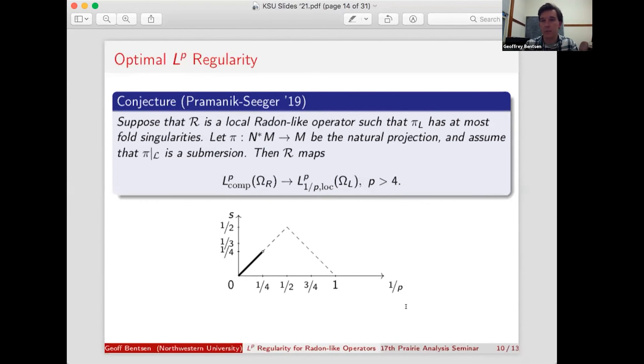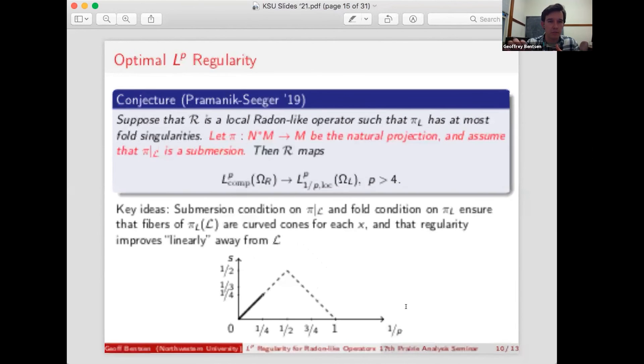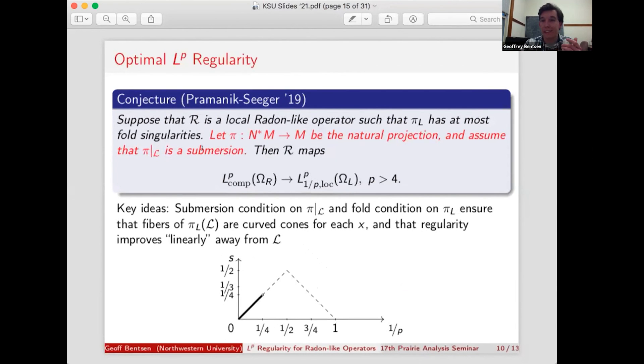And that second assumption, that additional assumption we need, is presented in this conjecture by Pramanik and Seeger. So it's specifically that if we take this projection from the conormal bundle of M down to M and restrict that map to our set of singularities, the resulting map there is a submersion. And what Pramanik and Seeger were able to prove is that if this map is a submersion, then the fibers are indeed curved cones for each x. And in fact, what's conjectured is you don't need both pi L and pi R to be folds. You should be able to get away with just one of those maps having fold singularities. And the conjecture, just to finish stating it, is if those two things are true, then you get this optimal 1 over p derivative gain for p greater than 4.